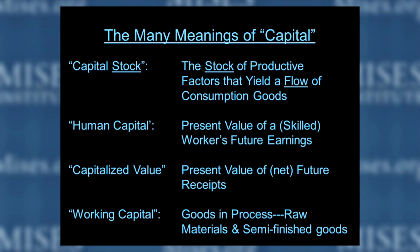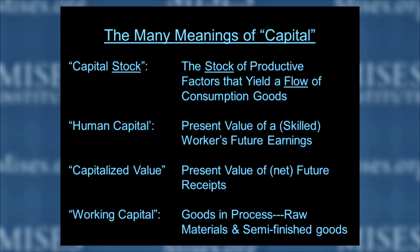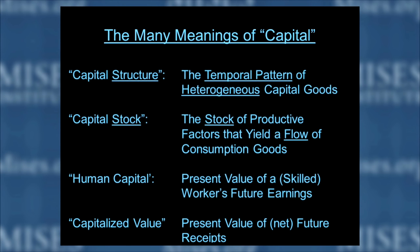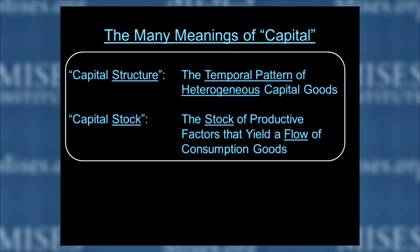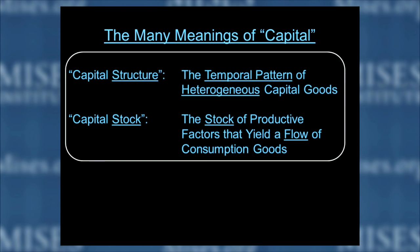Capital stock: the stock of productive factors that yield a flow of consumption goods. This is the Frank Knight view, and it's defined dimensionally. A stock is something that exists right now; the flow is on its way out. What we're going to focus on today is that distinction between the structure — that's the Austrians — and the stock-and-flow on the other hand. That's Friedman and Knight. That's the contrast I want to make.